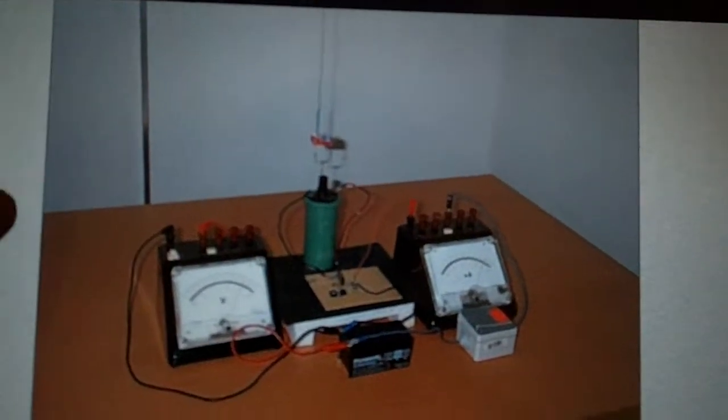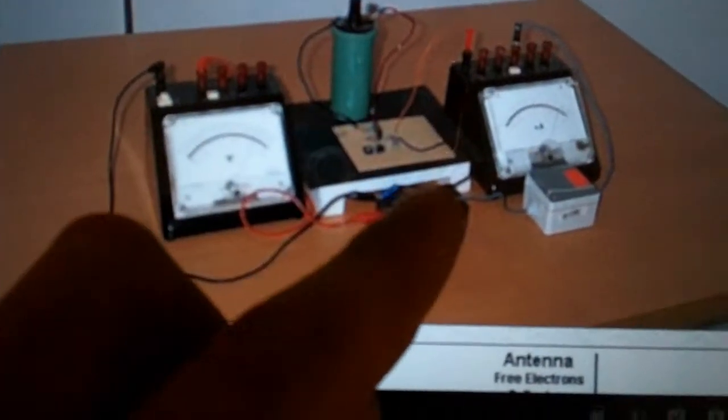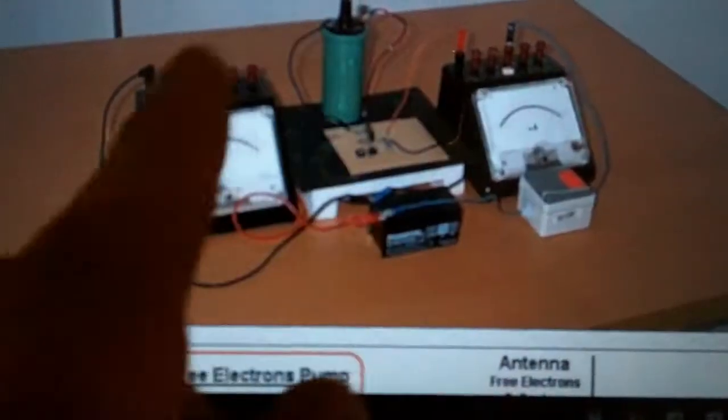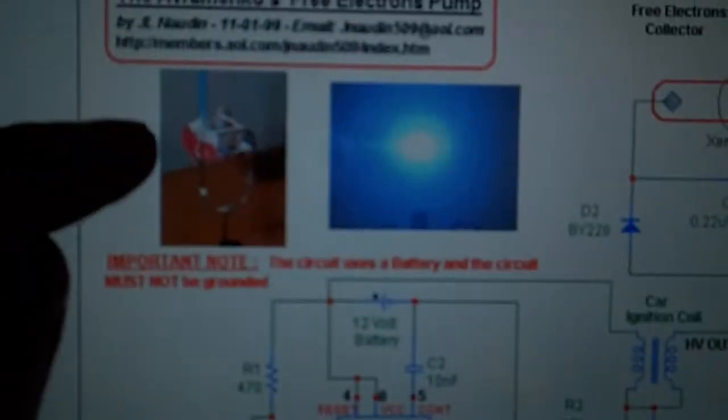Here you see his setup. He's got a big car coil in the middle, a little battery, two meters, and here, very tiny, you can almost not see it, but this is the xenon lamp.